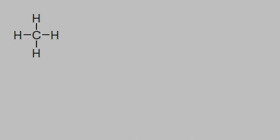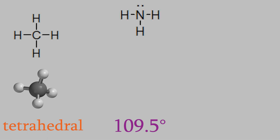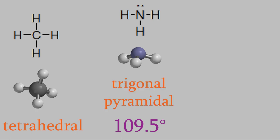Here's another example. We saw that methane is a molecule with four bonds on the central atom and no electron pairs, making a shape called tetrahedral with a 109.5-degree angle between the bonds. If we look at the Lewis dot structure for ammonia, you can see it has only three bonds, but there's also an electron pair on the nitrogen. That means the molecule looks like this. There's still an angle of about 109.5 degrees between the bonds, but we can't see the electron pair. That means this shape isn't tetrahedral — instead, it's called trigonal pyramidal.